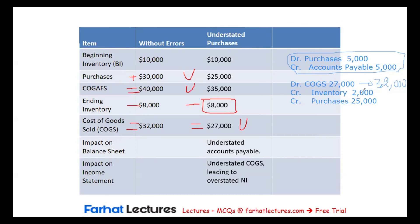The inventory here is correct — the credit to inventory is $2,000, because we had a beginning of $10,000 and the ending inventory is $8,000. There is no difference here. However, the credit to purchases is $25,000, and this is what caused the understatement of cost of goods sold. It should have been $30,000.